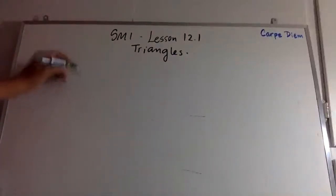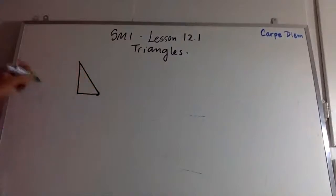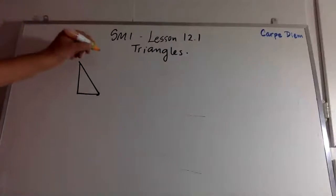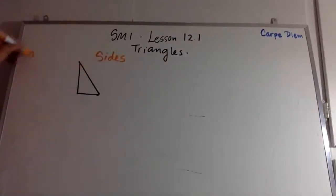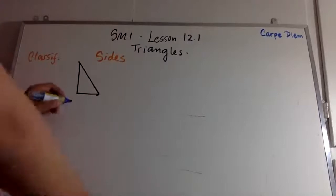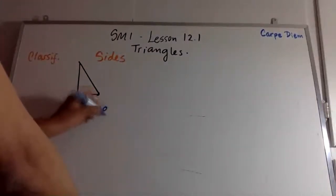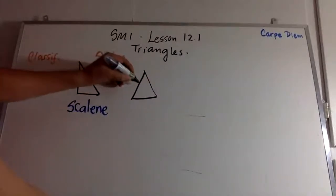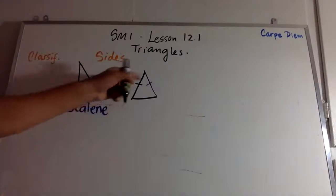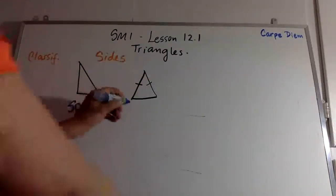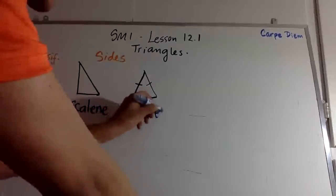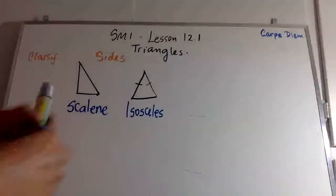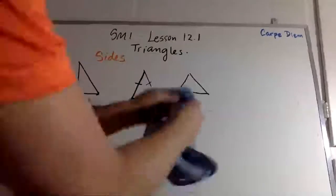The way you classify triangles — let's talk about the sides first. Classification by sides: when all three sides have different lengths, we call it scalene. Sometimes we have triangles where two sides are congruent, meaning they are the same. When two sides are congruent, we say this is an isosceles triangle.